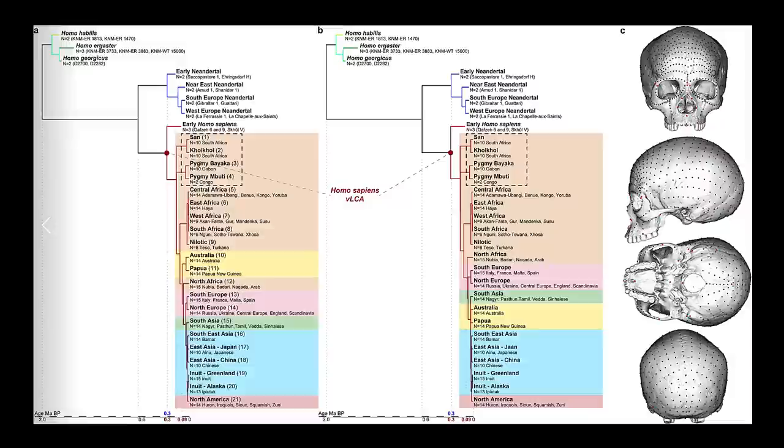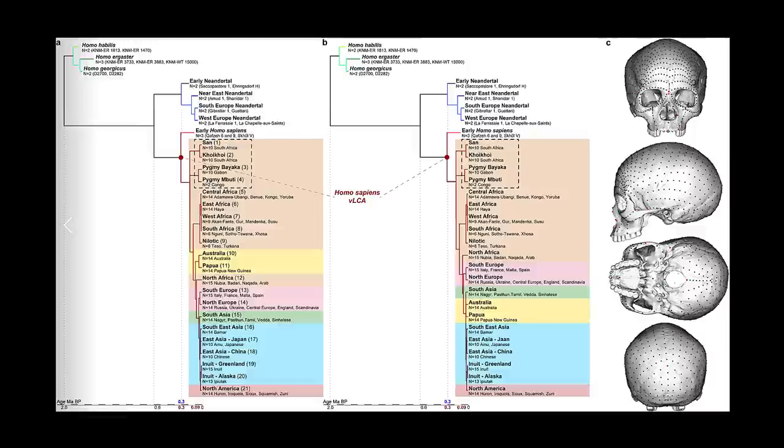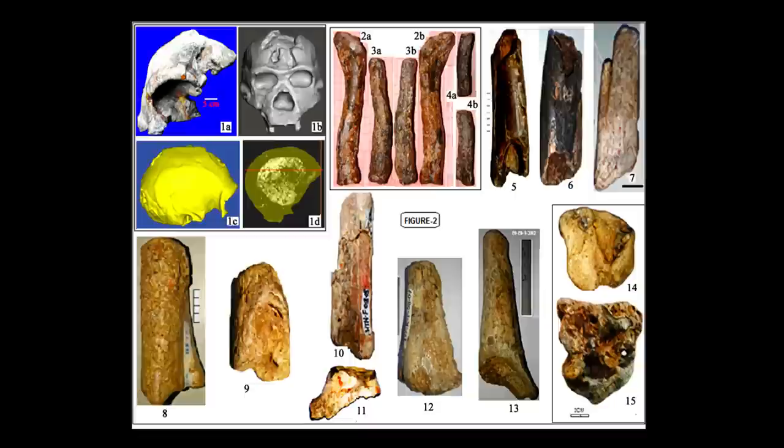This dating is important, because if the skull is recognized as an archaic Homo sapiens, that could throw a wrench in the out-of-Africa hypothesis, and support the idea that Homo sapiens evolved beyond Africa, possibly the Indian subcontinent, before moving into Africa around 300,000 years ago.